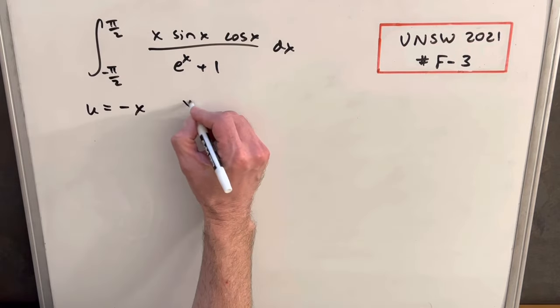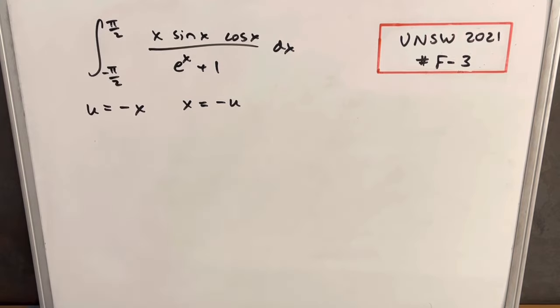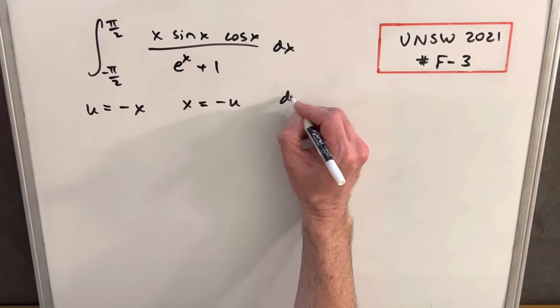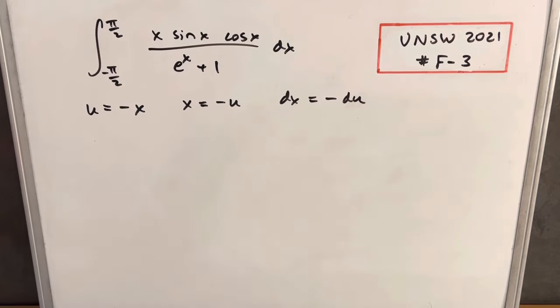From there, that also means that x is minus u. And then we can get our dx value. Taking the derivative, we have dx is minus du.